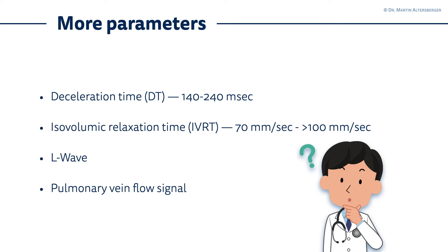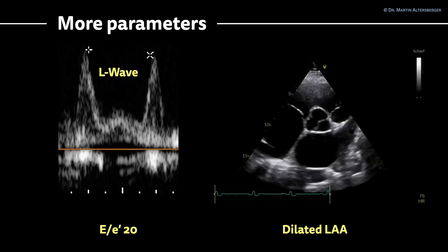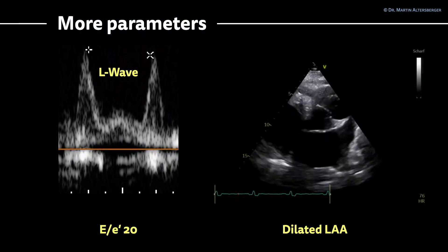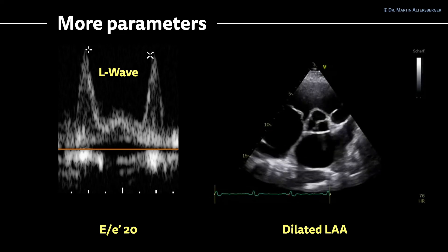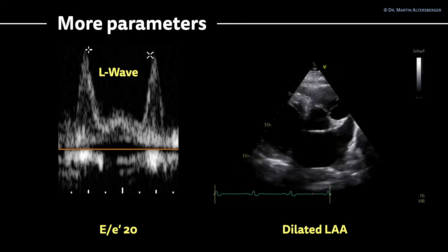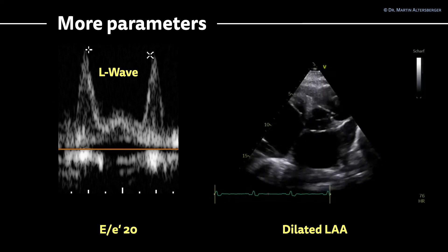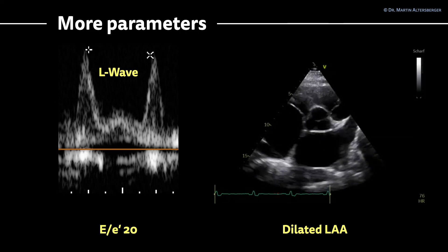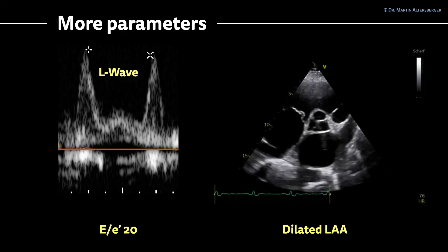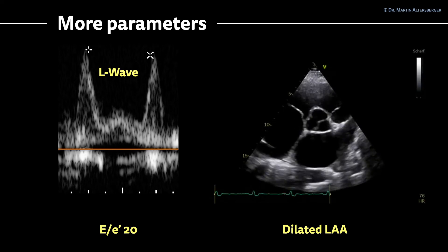Another situation: when you see an L wave, it means that there are very likely elevated filling pressures. You can also interpret the pulmonary vein flow signal. If you see a dilated left atrial appendage — as seen on the right side of the slide — that also points towards elevated filling pressures. On the left-hand side, the E to E' ratio of this patient was 20, so definitely pathological, and you can nicely see an L wave. The L wave is a wave in between the E and the A wave. In case you see an L wave, elevated filling pressures are very likely.